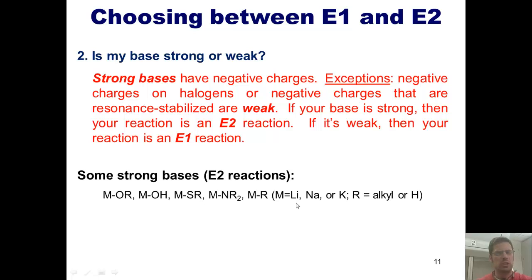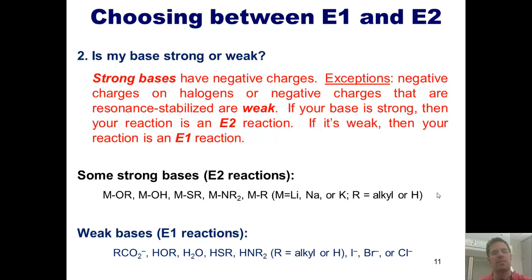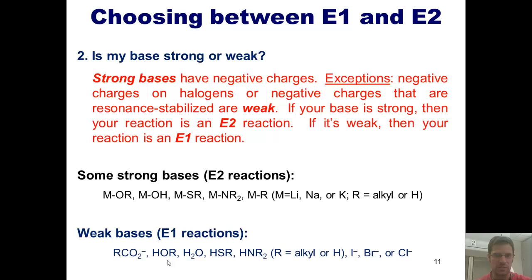Here are examples of strong bases. M represents any group 1 metal — lithium, sodium, or potassium. You can mentally replace that metal with a negative charge. Strong bases include a negative charge on an oxygen bonded to a hydrocarbon chain, an oxygen bonded to a hydrogen, a sulfur on an alkyl chain, a nitrogen, or an alkyl chain itself. Weak bases favoring E1 include carbonates (resonance stabilized), alcohols (no negative charge — just lone pair electrons), water, thiols, amines, and negatively charged halogens such as iodide, bromide, and chloride.